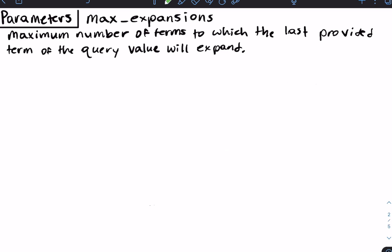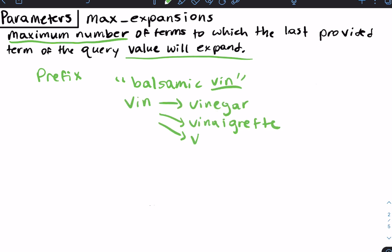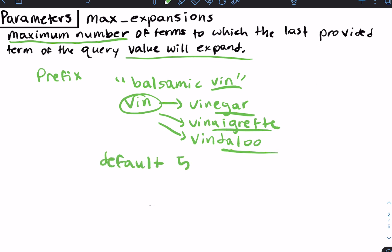Max expansions is the maximum number of terms to which the last provided term of the query will expand to. Since the last term is a prefix, let's say we have 'balsamic' and the prefix 'vin' — it can expand to 'vinaigrette' or 'vindaloo', for example. These possible suffixes are known as expansions. The default value for the max expansions parameter is 50, meaning all the possible words that this prefix can expand to must be no more than 50.